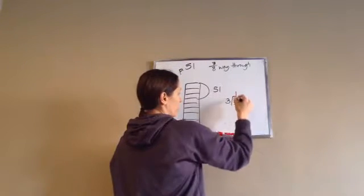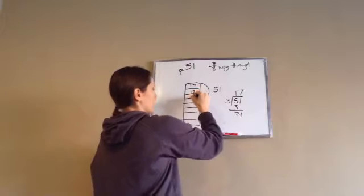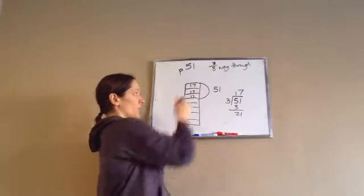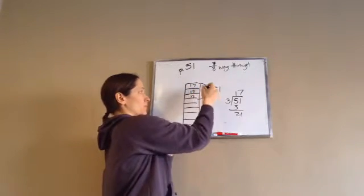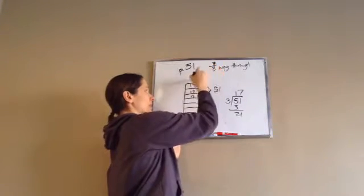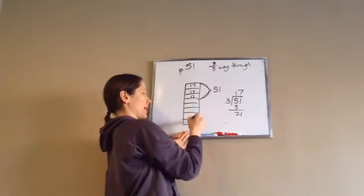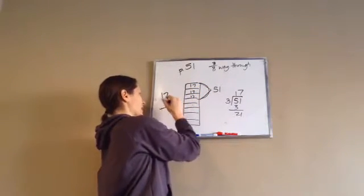So we need to take this 51 and divide it by three and get 17. So as you can see, we're going to take 17, 17, and 17, which makes 51 pages. So how many pages is the book? 17 times one, two, three, four, five, six, seven, eight. 17 times eight.